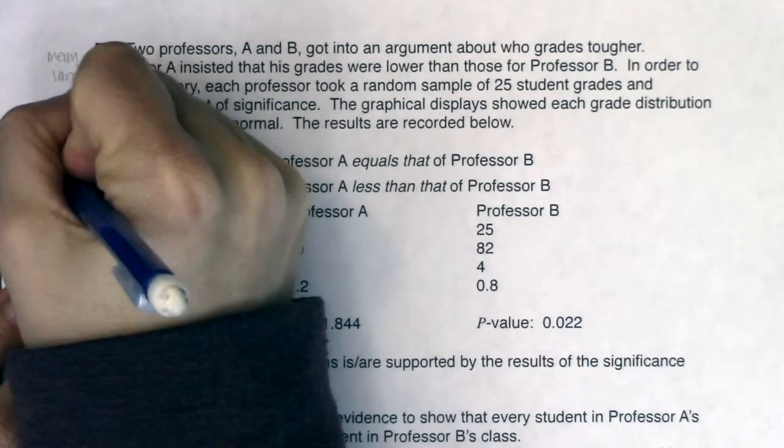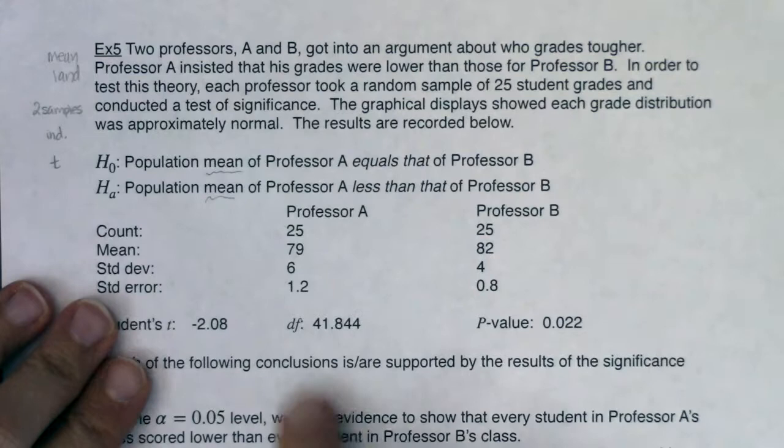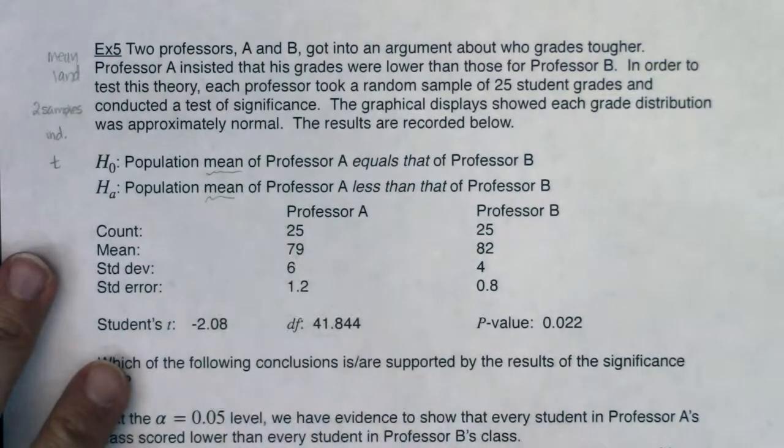Because we're in mean land we're going to be running a t-test. And then actually when I look at it they already ran the t-test for me. Right? Here's my standard deviation in each class. Here are my standard errors on the sampling distribution. Again I would take 6 divided by the square root of 25, 4 divided by the square root of 25. There's my test statistic. There were my degrees of freedom.